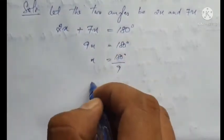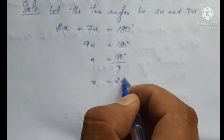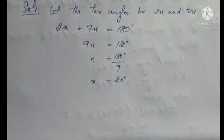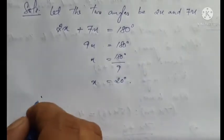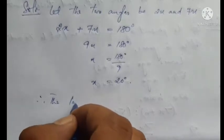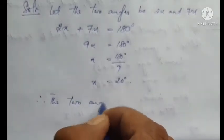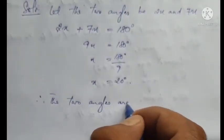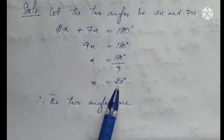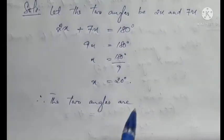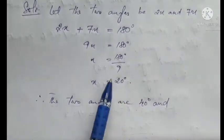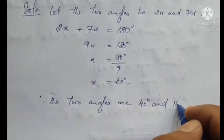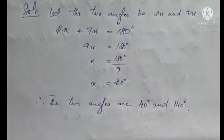So 9x equals 180, which gives x equals 180 divided by 9, equals 20 degrees. The two angles are 2x and 7x. The first angle is 2 times 20 equals 40 degrees, and the second angle is 7 times 20 equals 140 degrees.